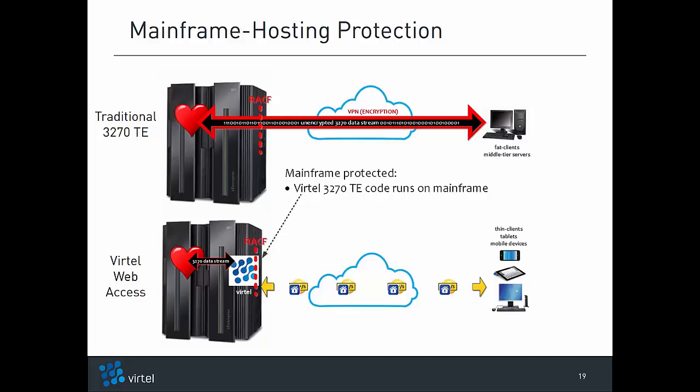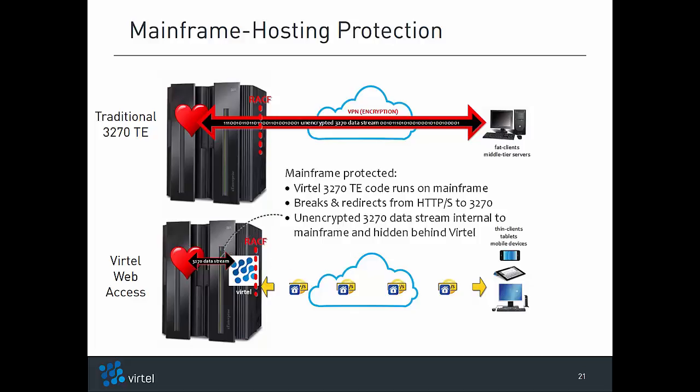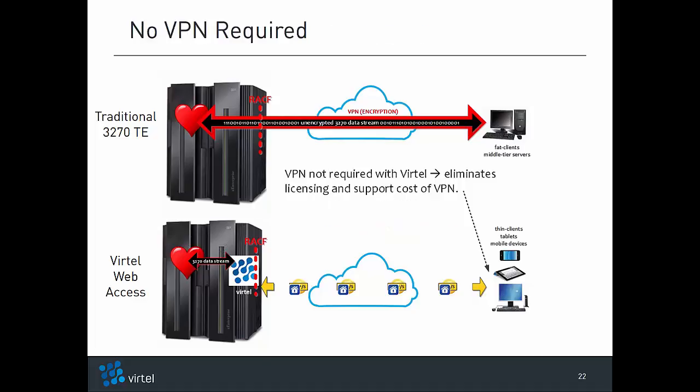The fact that Virtel Web Access runs on the mainframe provides additional security features. The code of the Virtel product runs on the mainframe where it cannot be hacked by web hackers, unlike server and client-based 3270 terminal emulation applications. Virtel breaks and redirects the connection between the user and the 3270 application from HTTP to 3270 data flows and back, making it quite challenging for a web hacker to attack mainframe assets because the connection protocols on each side of Virtel are totally different. In effect, Virtel acts as another firewall component between the 3270 applications and the web. Unencrypted data exchange with application screens remains inside the mainframe between VTAM and Virtel, behind Virtel acting as a firewall and away from the internet.